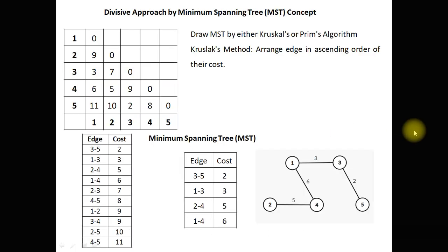This is the problem. There are 5 vertices: 1, 2, 3, 4, 5 and the adjacency matrix is given. The first step is to build the minimum spanning tree by either Prim's or Kruskal's method. I am following here the Kruskal's method, so we arrange the edges in ascending order of their cost.